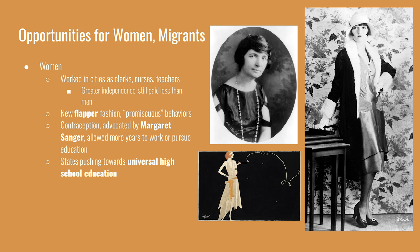Women also started to use contraception more frequently. Advocates like Margaret Sanger advocated for having fewer children or delayed childbearing. This allowed women to have more years to work and be more independent, and also to pursue education or other professional pursuits. Sanger founded the American Birth Control League. The issue of contraception continues through the middle of the century, developing into the abortion debate.